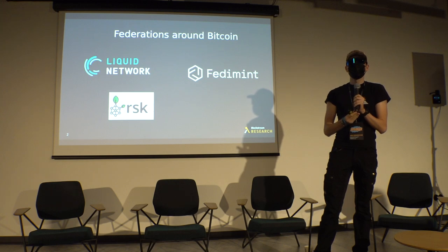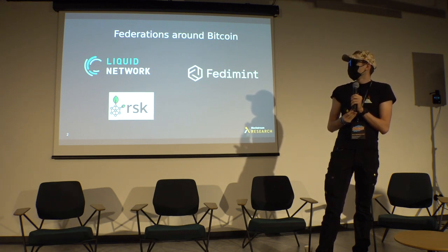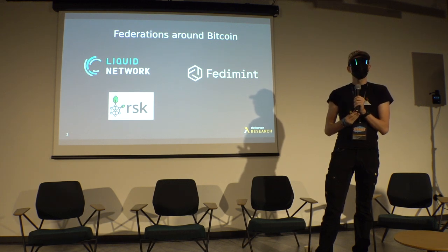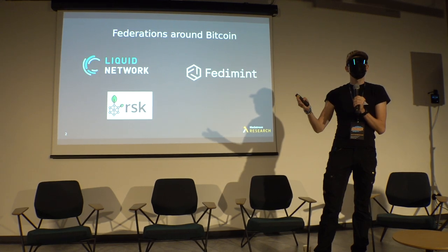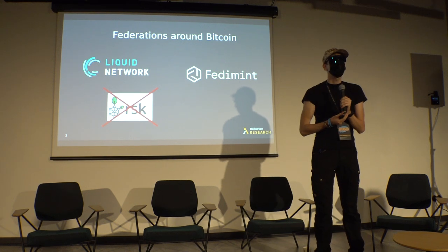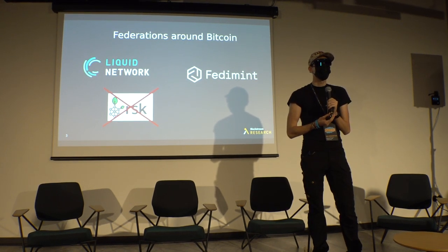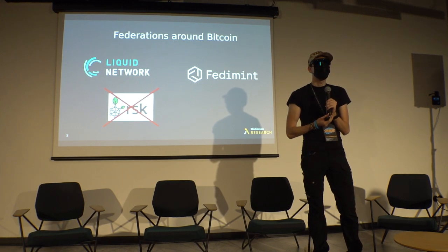What are the federations in Bitcoin today? We have the Liquid Network, which was the first federation of all and which coined the term 'federation' on Bitcoin. Then there was RSK, which also used a federated peg mechanism to connect an EVM-based sidechain to Bitcoin, but they're not doing this anymore. And last but not least there is Fedimint, which is my project.